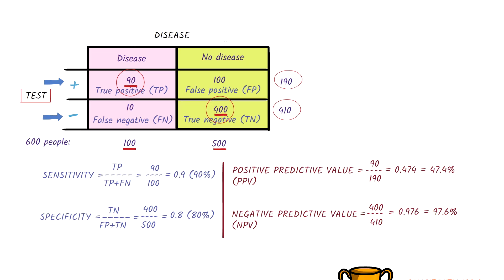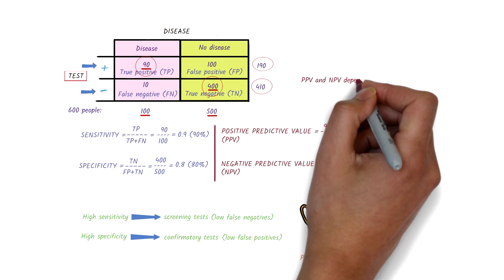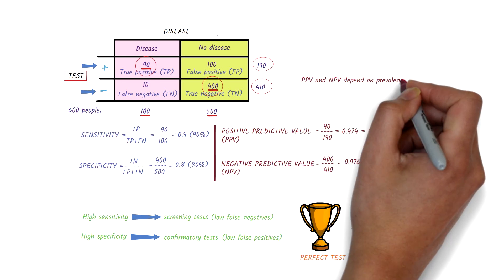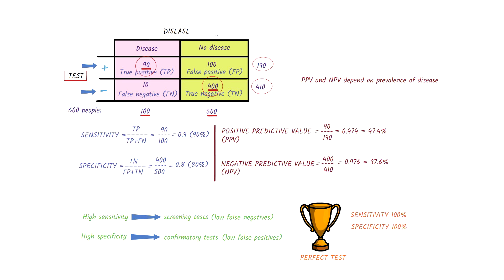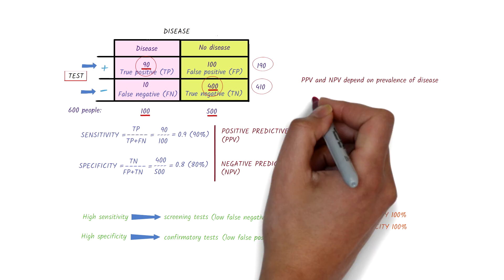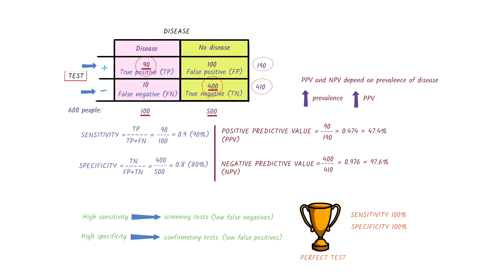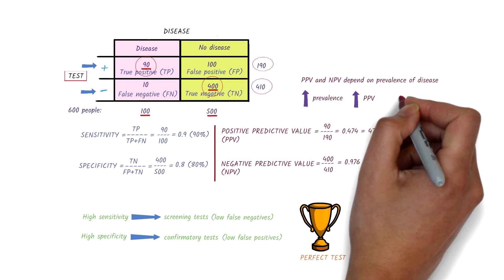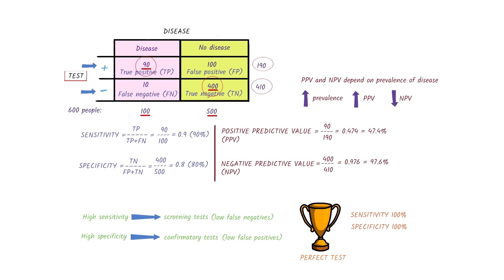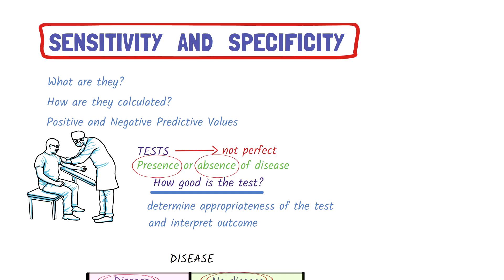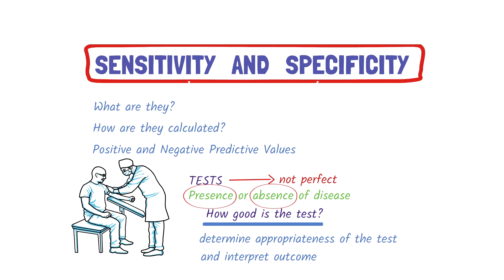Positive and negative predictive values depend on the prevalence of disease — in other words, how much disease there is in the population. In general, an increase in disease prevalence is associated with an increase in positive predictive value and a decrease in negative predictive value. And that's an overview of sensitivity and specificity, and a quick look at positive and negative predictive values.